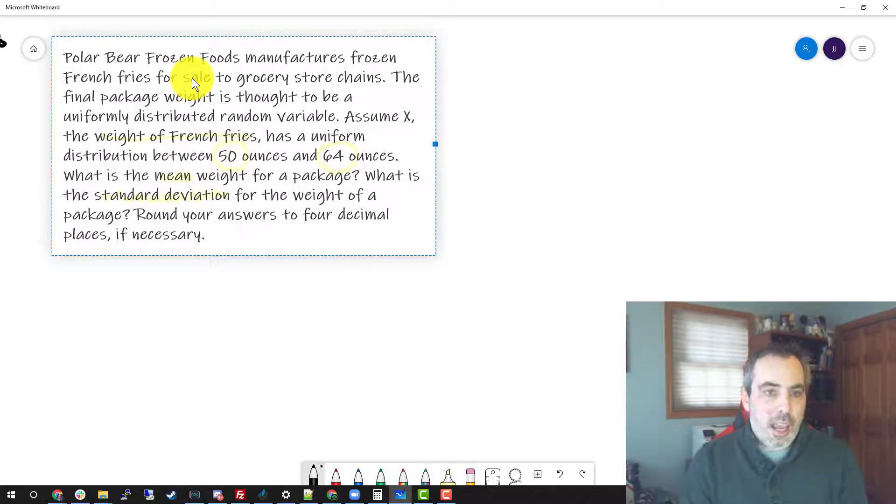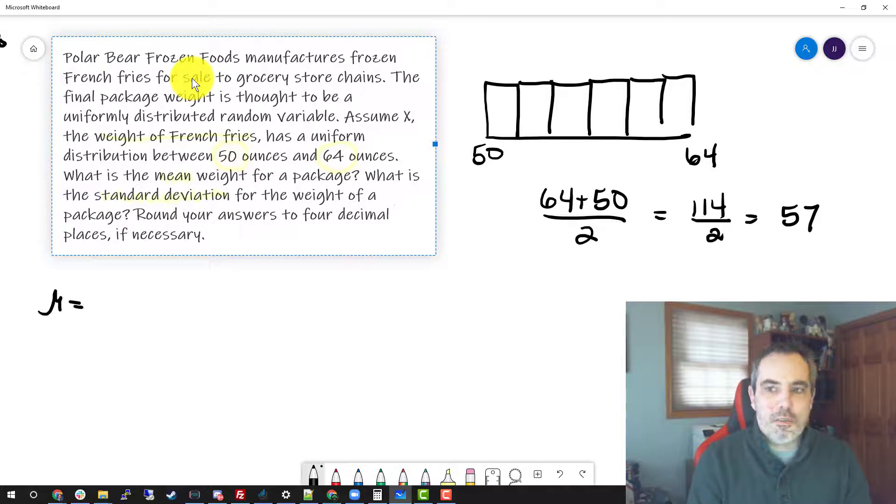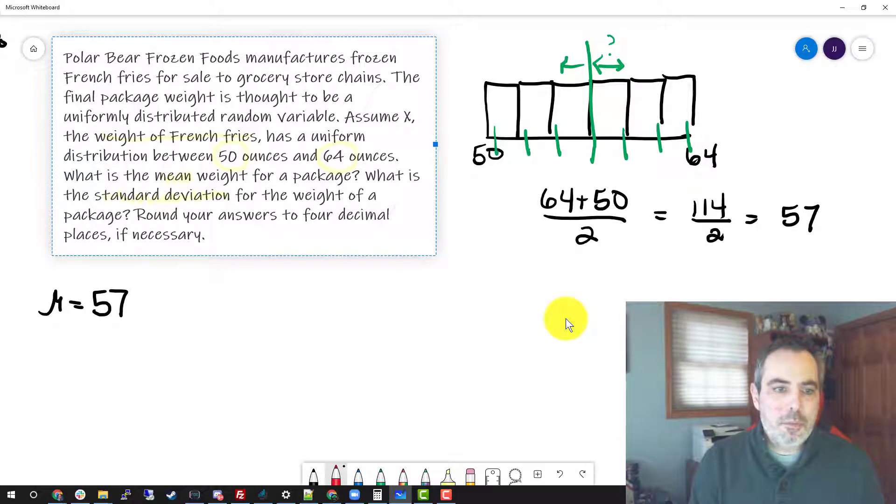The average is really simple. It hasn't changed, especially since this is uniform. We're looking at a uniform distribution where every weight is equally likely from 50 all the way to 64. Finding the average weight is simply doing the traditional mean: 64 plus 50, so I have 114 divided by 2. I end up with an average μ of 57. The mean formula was simply B plus A divided by 2.